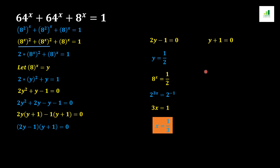Now solving y plus 1 equals 0: the 1 moves to the other side and becomes minus 1, giving y equals minus 1. Since y equals 8 to the power x, this means 8 to the power x equals minus 1, which is not an acceptable condition for this expression. Therefore the only valid answer is x equals 1 over 3. I hope this video is useful. If you like it, please hit the like button and subscribe to our channel. Thank you.